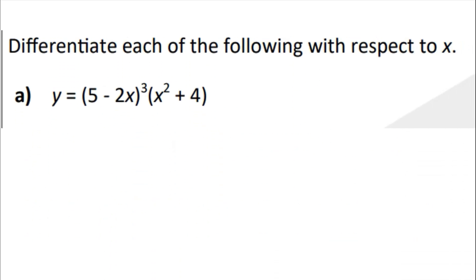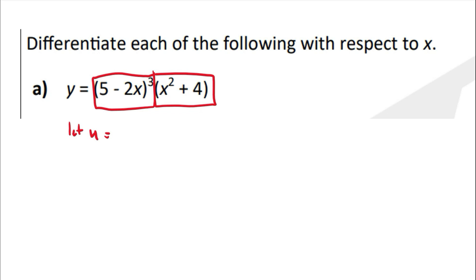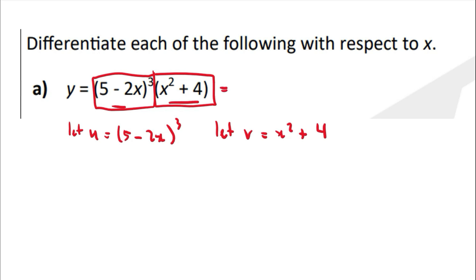Let's start with the first one. Differentiate each of the following with respect to x. We have one equation with two different algebraic expressions. We're going to label them separately. Let u equal the first one, which is (5 minus 2x) cubed, and let v equal the second one, x squared plus 4. So y equals u times v — a product of two different algebraic expressions.